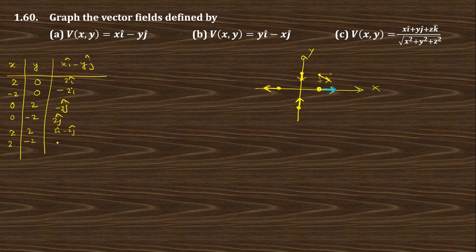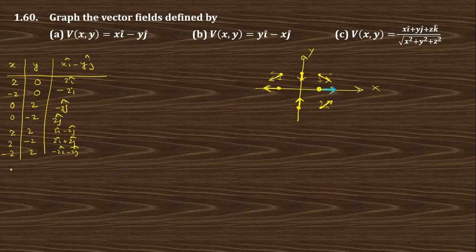For (2, -2), y is minus 2, so at that point we get 2i cap plus 2j cap — the resultant is along that direction. For (-2, -2), we get minus 2i cap minus 2j cap — minus 2i cap along that, minus 2j cap along that, resultant along that direction. For (-2, -2) we get minus 2i cap plus 2j cap, so i cap is minus and j cap is plus — resultant will be in that direction.